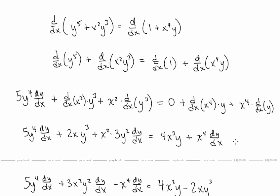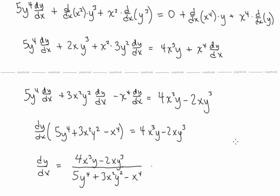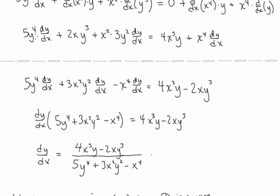Our goal is to solve for dy/dx, so we collect all dy/dx terms on one side and everything else on the other. We have 5y⁴·dy/dx plus 3x²y²·dy/dx, subtract x⁴·dy/dx, on the other side we have 4x³y minus 2xy³. We factor out dy/dx and divide by the remaining factor to get our expression for dy/dx.